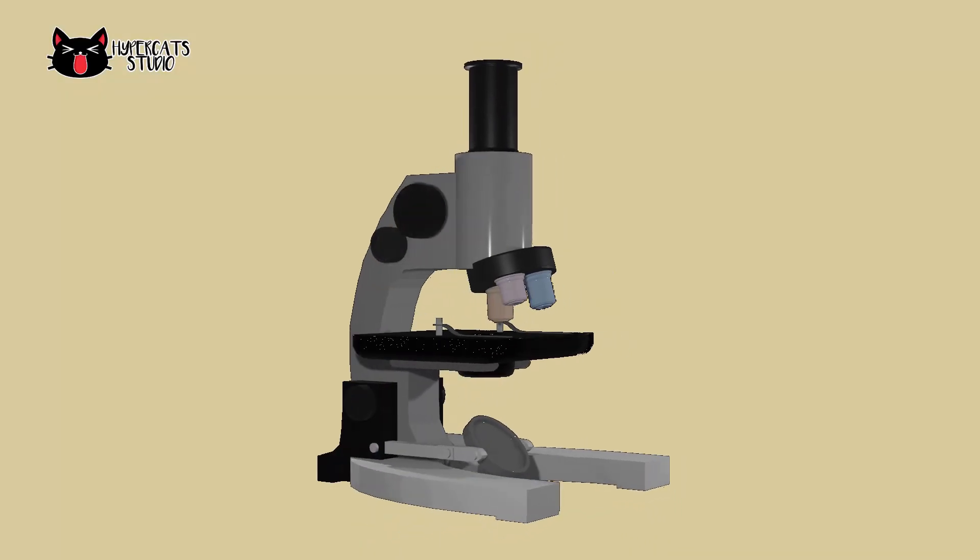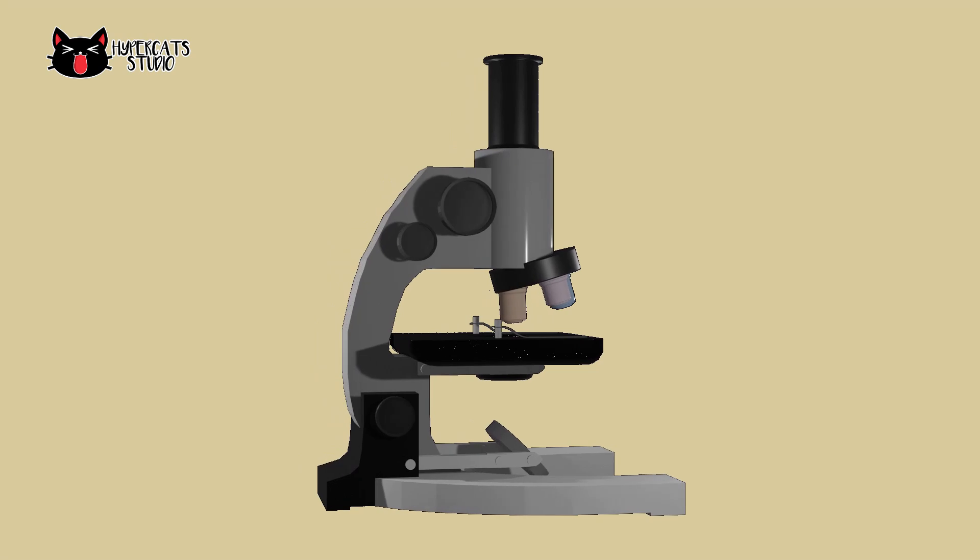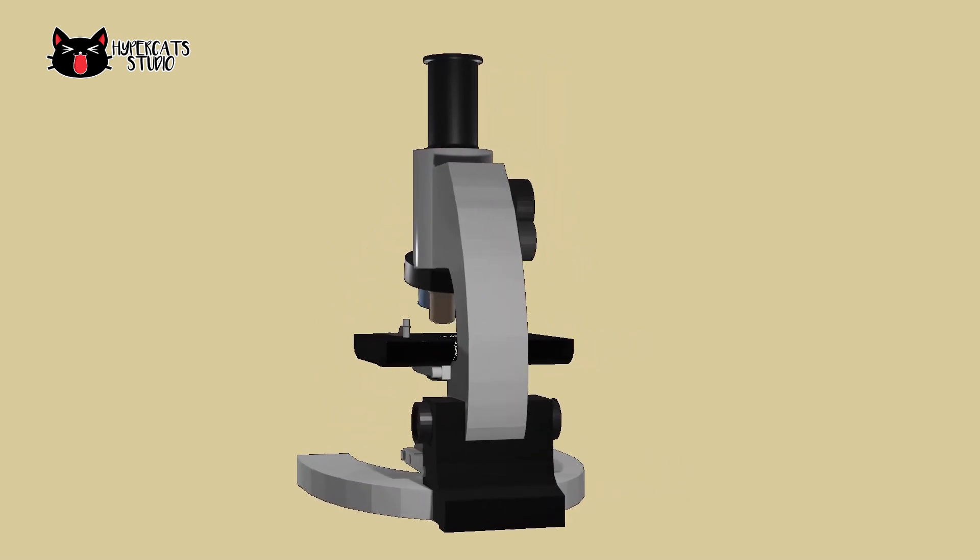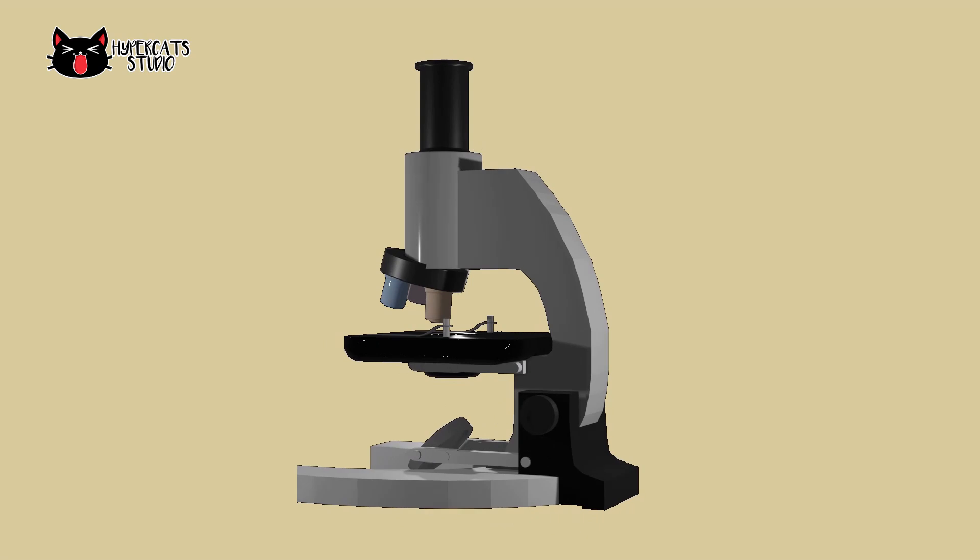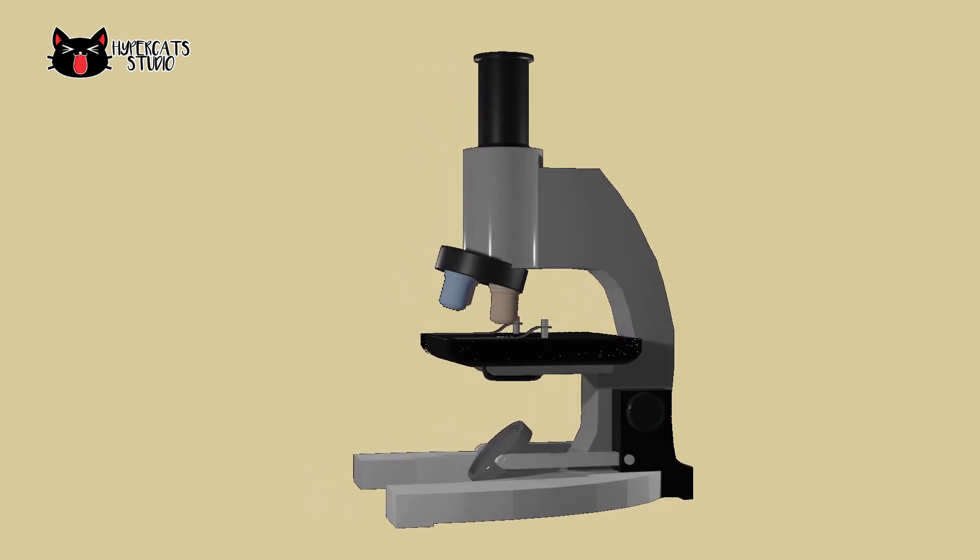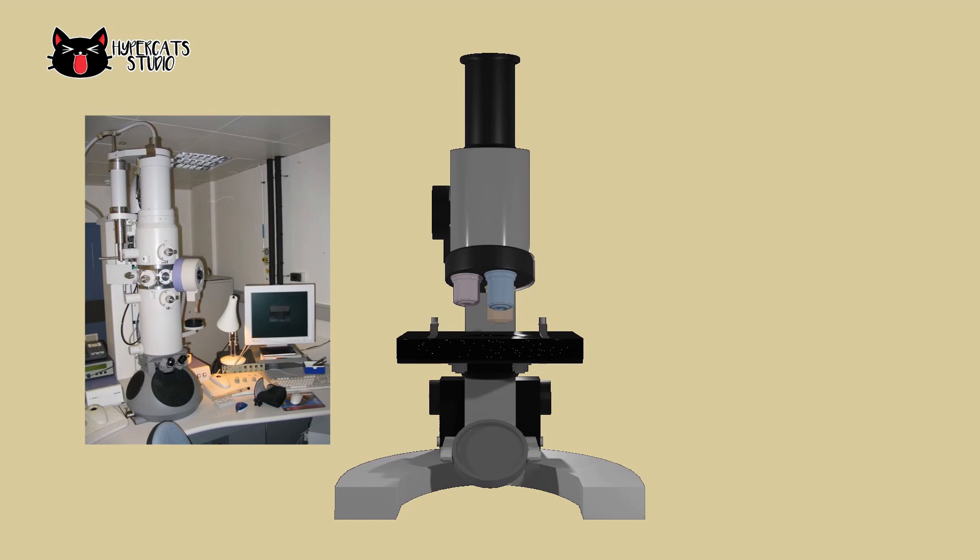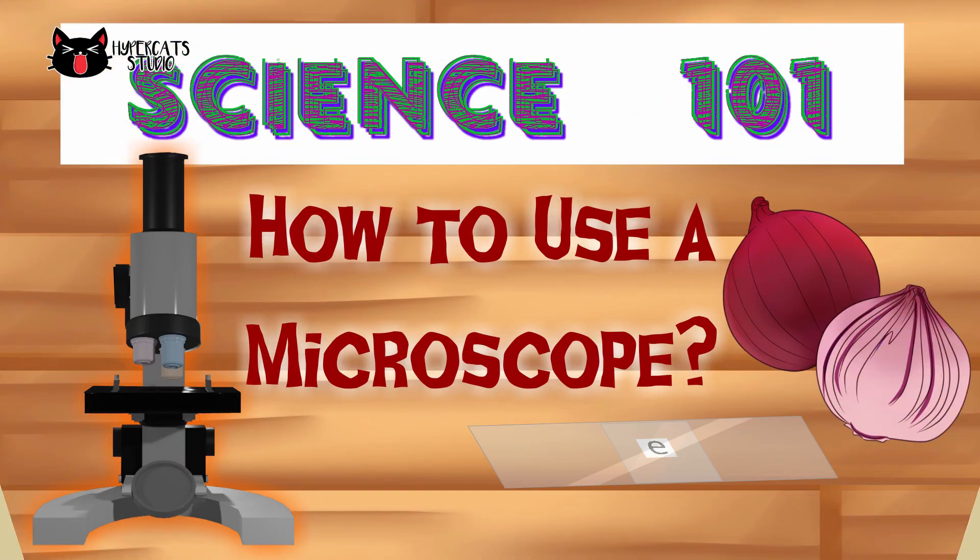Microscopes are important for scientists and students to study microorganisms like bacteria and cells, and structures that are too small for our eyes to see. They use different types of microscopes like compound light microscopes and electron microscopes. Let's learn how to use microscopes here on Science 101.